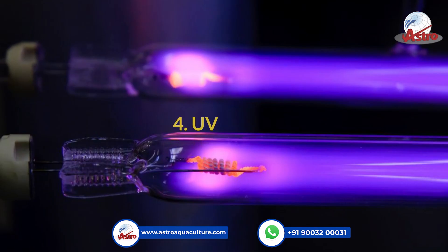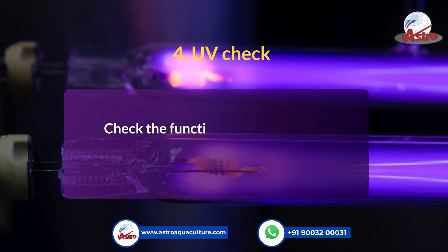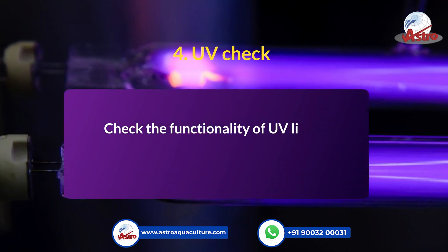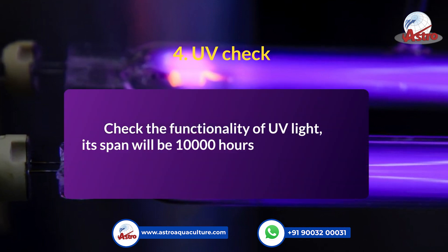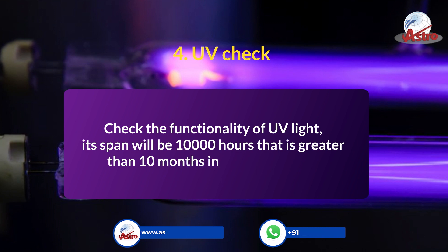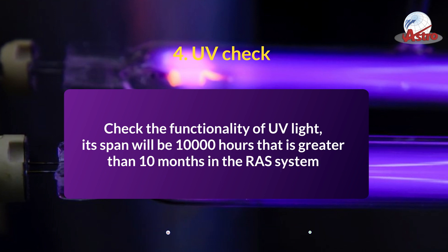Measure 4: UV check — check the functionality of UV light. Its lifespan is 10,000 hours, which is greater than 10 months in the RAS system.